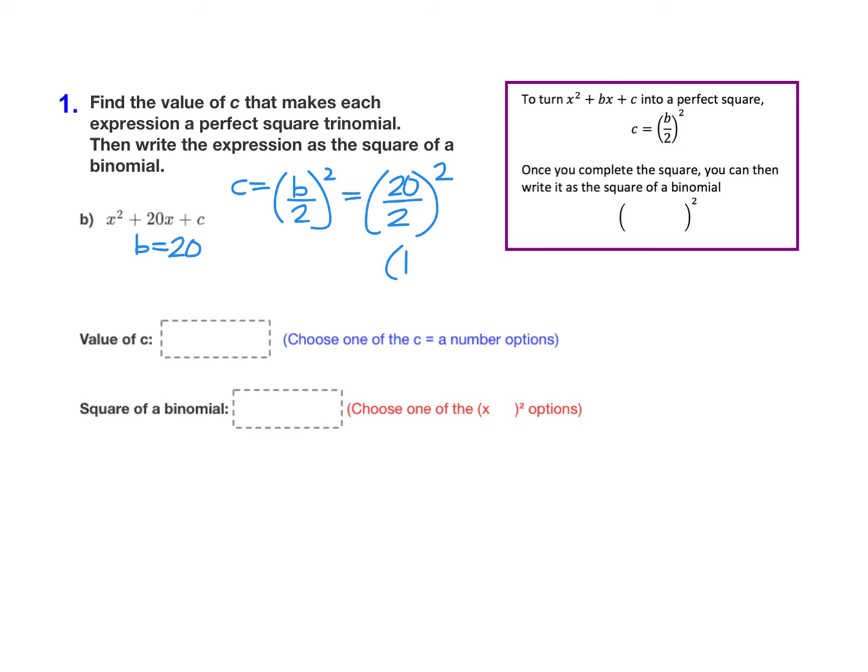20 divided by 2 is 10, and 10 squared means 10 times 10, which is 100. So we want c to be equal to 100.